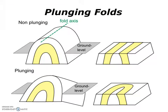Not all folds are non-plunging. The top fold on this image is non-plunging, like those seen in previous slides, and the eroded surface produces parallel outcrops. In the case of a plunging fold, as seen on the bottom of this image, the fold axis is no longer horizontal. As this type of fold is eroded, rather than parallel outcrops, the pattern we will see will be a U shape — in this case, a plunging anticline. Synclines can also be plunging and form similar outcrop patterns.